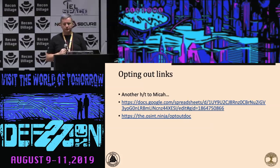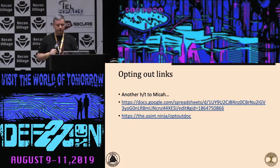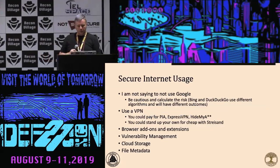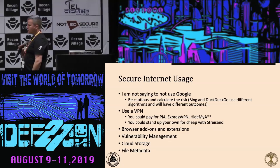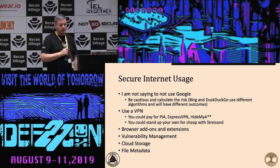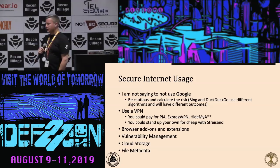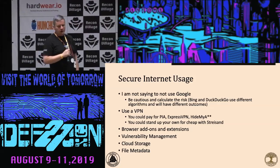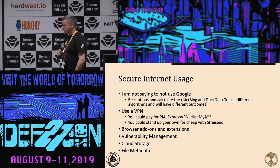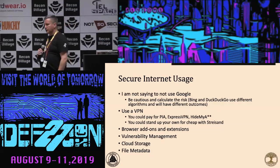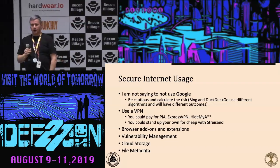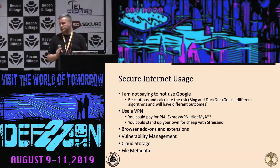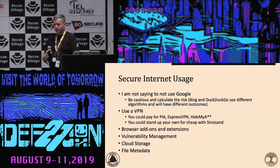Secure internet usage — I'm not saying you can't use Google, just that you might not want to trust it fully. Use a VPN — it was brought to my attention that there is suspicion that ExpressVPN has been influenced and possibly subverted by the Chinese government, so I'm not endorsing that even though it's on the slide. Do your own independent research. Watch your browser add-ons, extensions, vulnerability management posture — standard cyber housekeeping. Consider whether you're going to use your real name or real pictures on social media or dating apps.